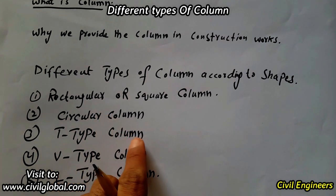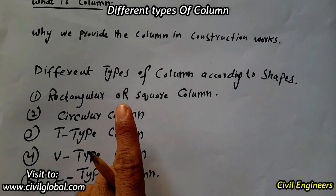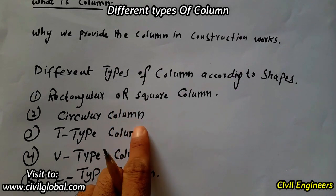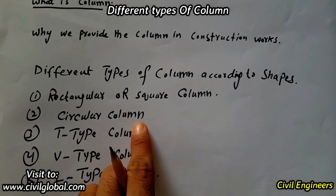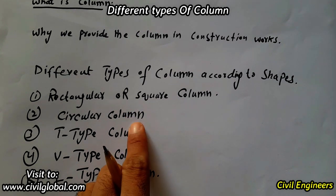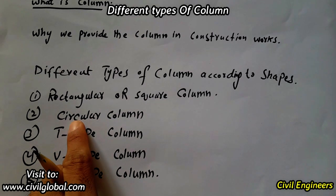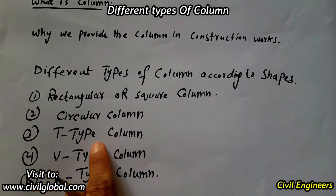The circular column is also called a special column, which is designed for mega projects — like construction of bridges — because of its use in the construction and piling of bridges. This is a very important column type.